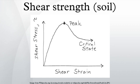The soil is free to dilate or contract during shear if the soil is drained. In reality, soil is partially drained, somewhere between the perfectly undrained and drained idealized conditions. The shear strength of soil depends on the effective stress, the drainage conditions, the density of the particles, the rate of strain, and the direction of the strain.